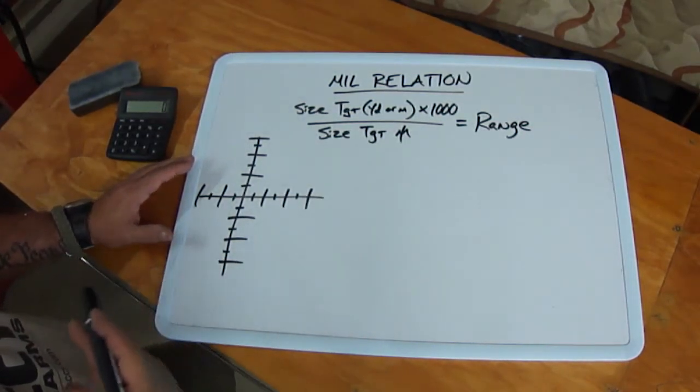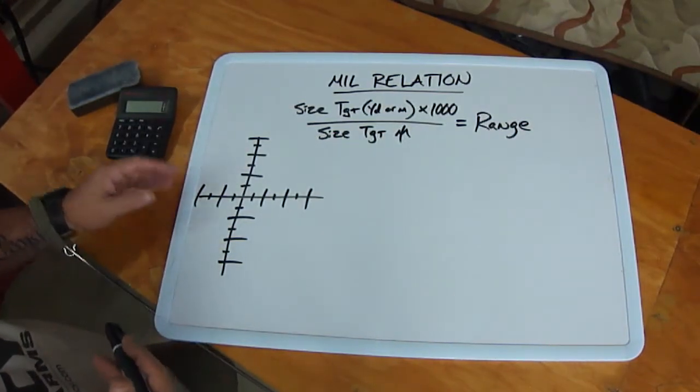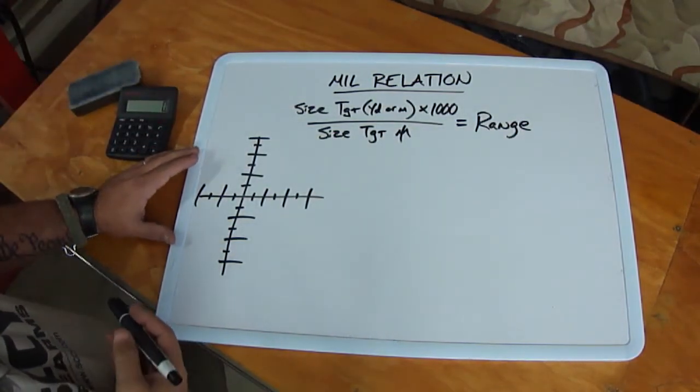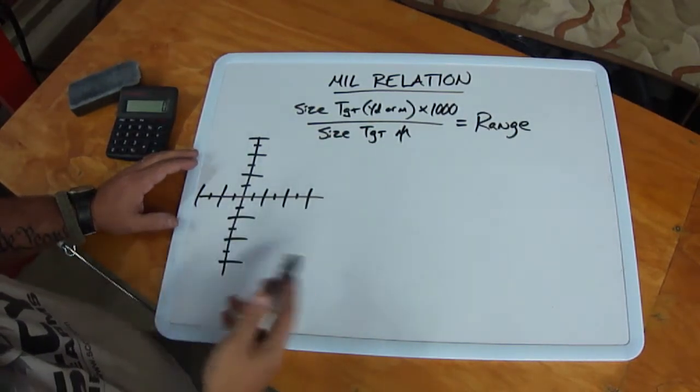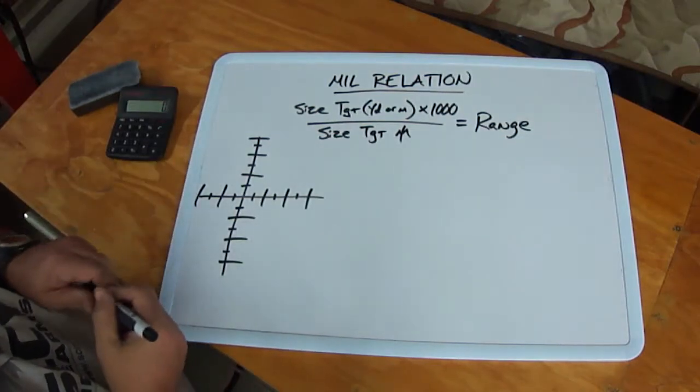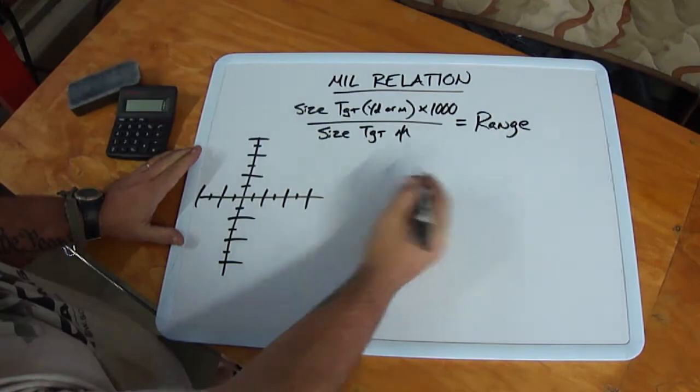Now obviously nobody walks around judging things in terms of yards. Nobody says that spray paint can is .167 yards tall. The easy way to figure it out is to take the size in inches and again known or estimated and divide it by 36.